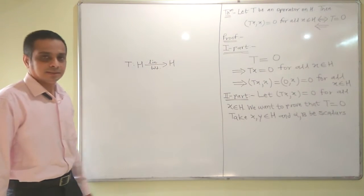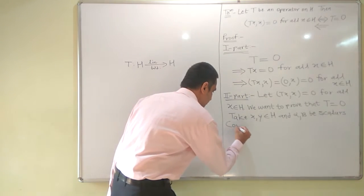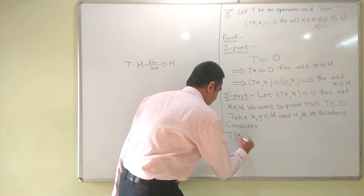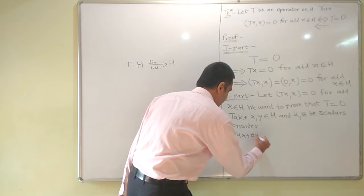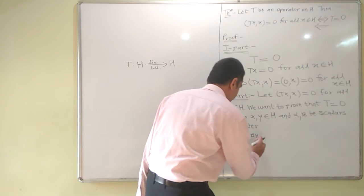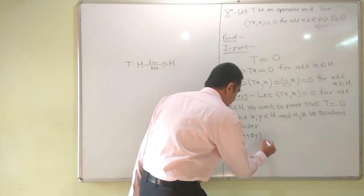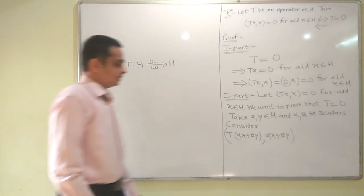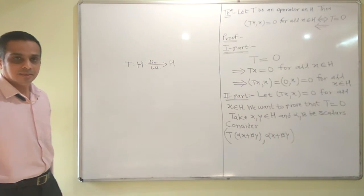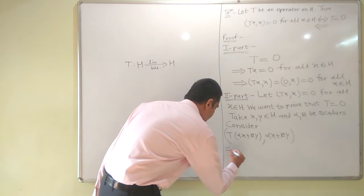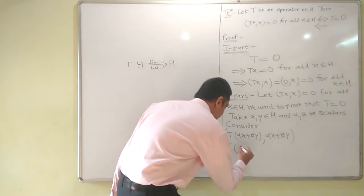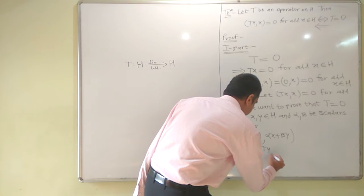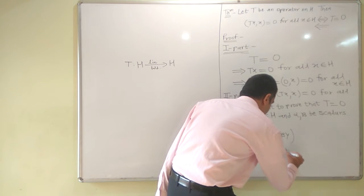Consider the expression: the inner product of T(αx + βy) with αx + βy. Simplifying this by linearity of T, we can write it as the inner product of αTx + βTy with αx + βy.